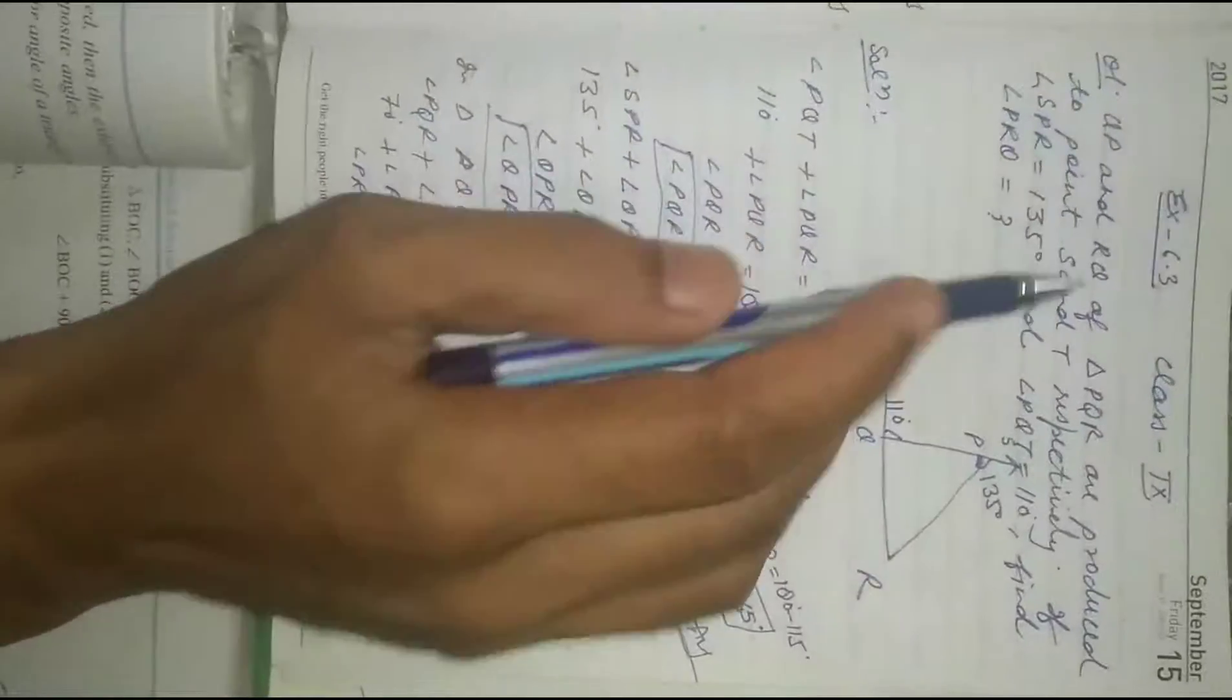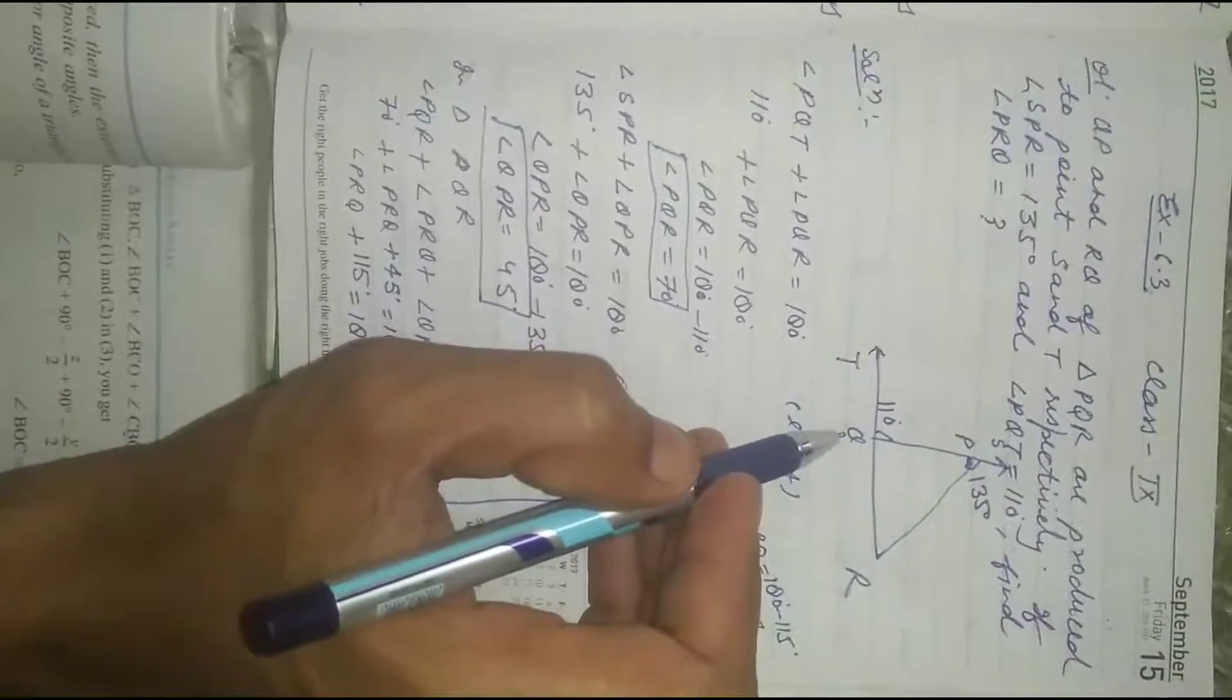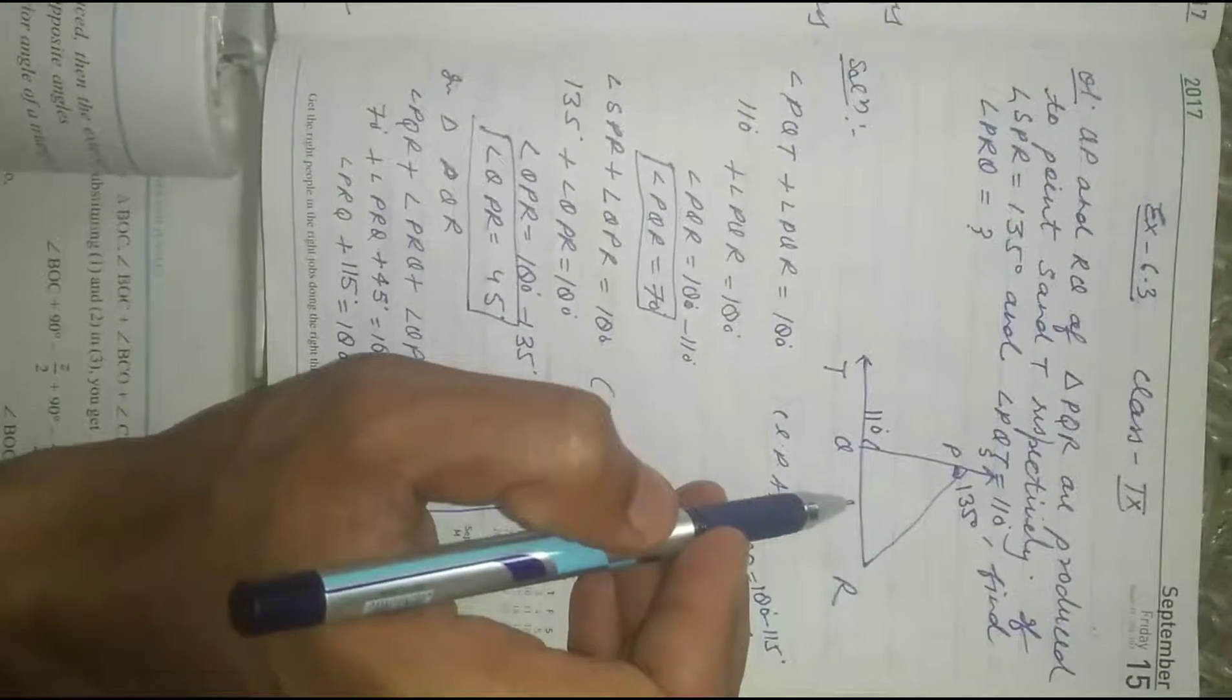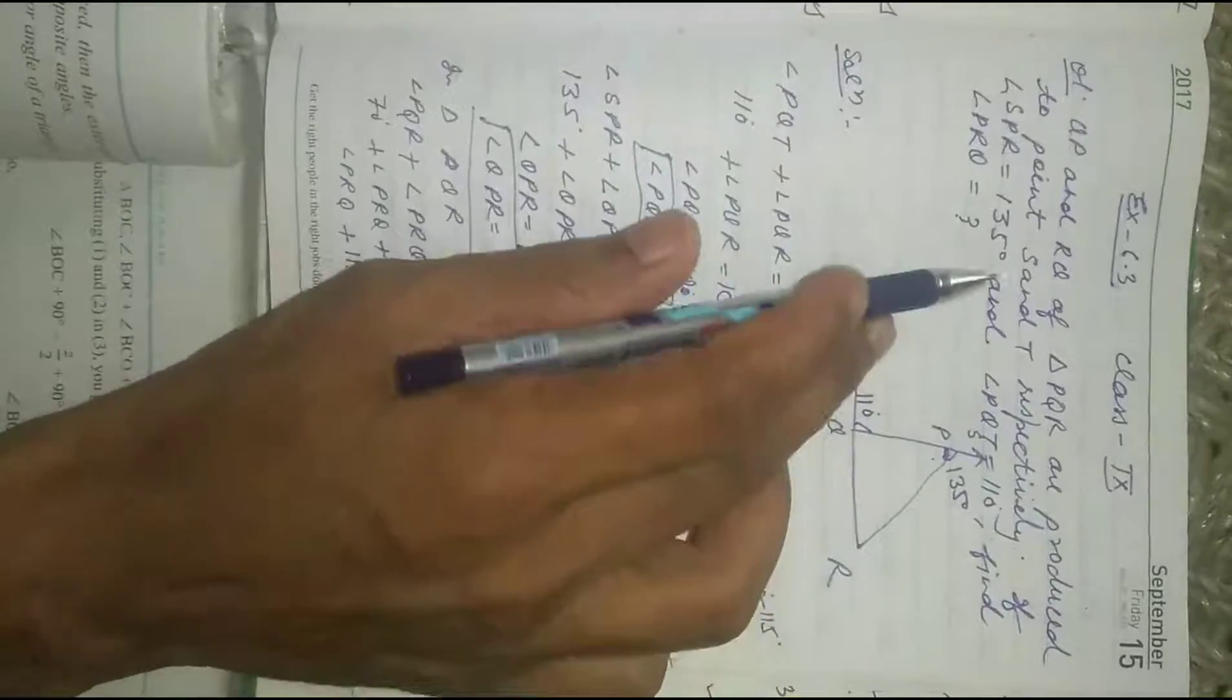In triangle PQR, we have sides QP and RQ... sorry, QR and PQ.